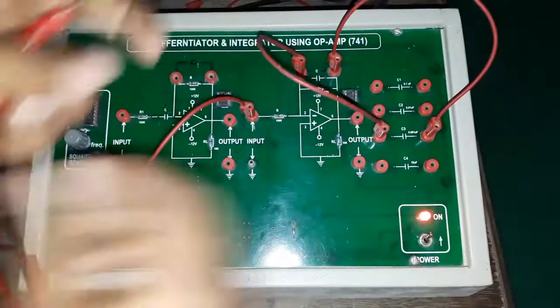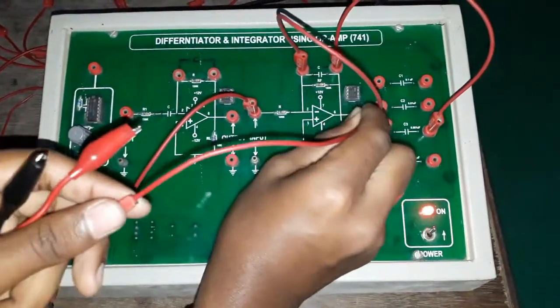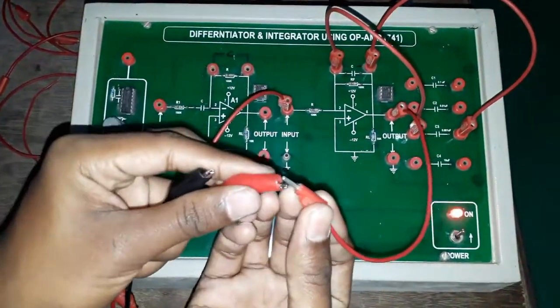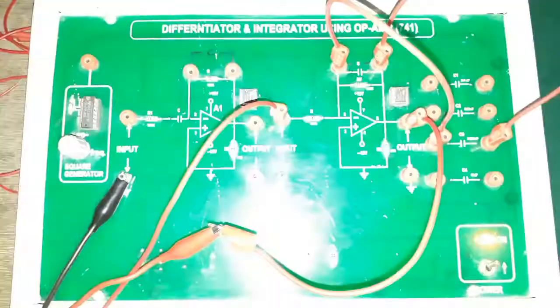The capacitors are connected. Now we should see the output. The output is taken from pin 6 of op-amp. Now I'm just connecting it - the black one is connected as ground. Now let's see the output in CRO.